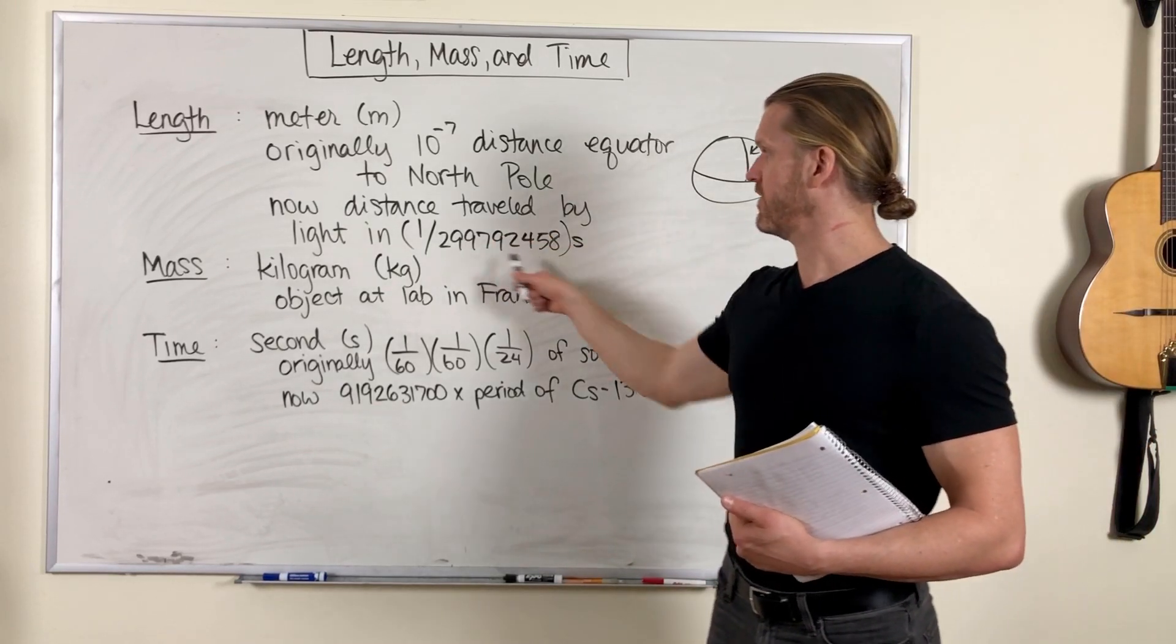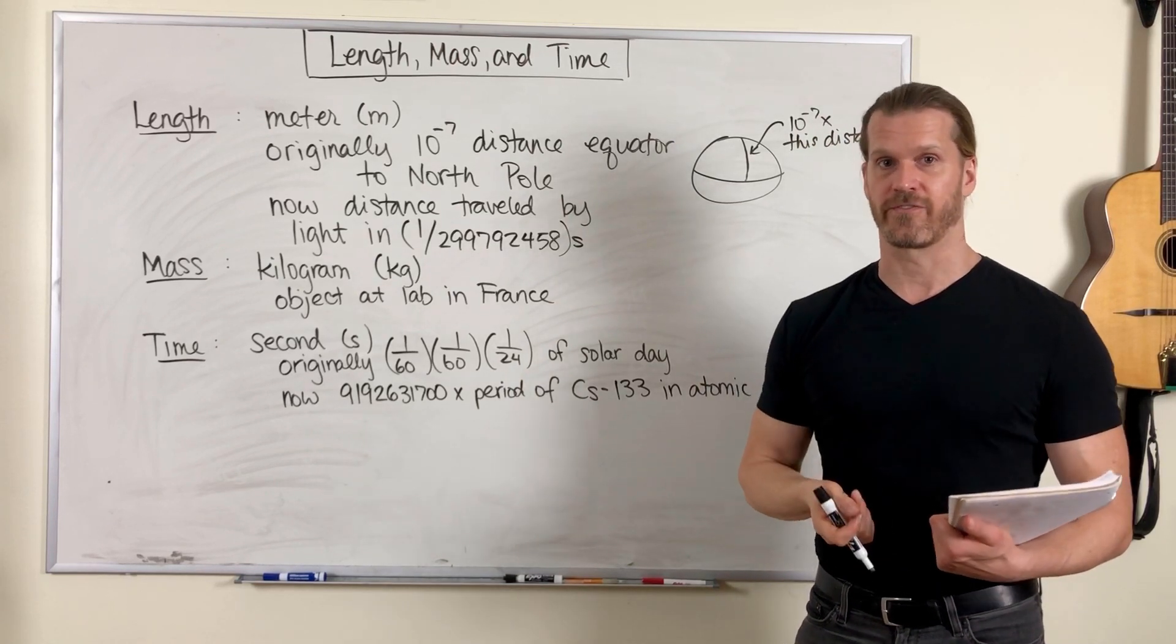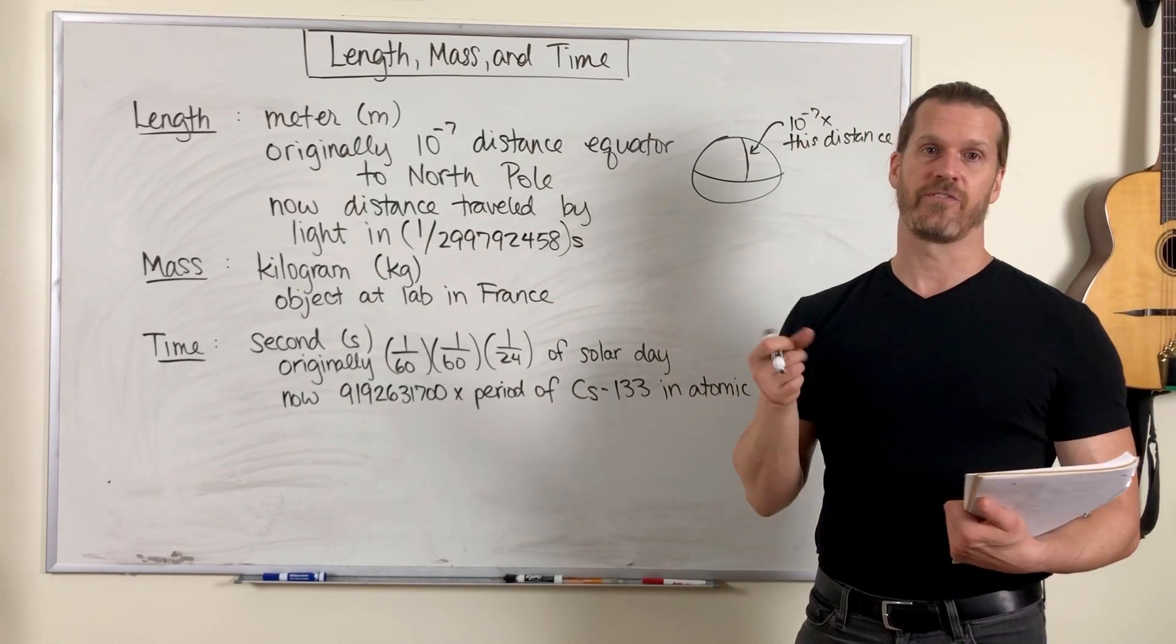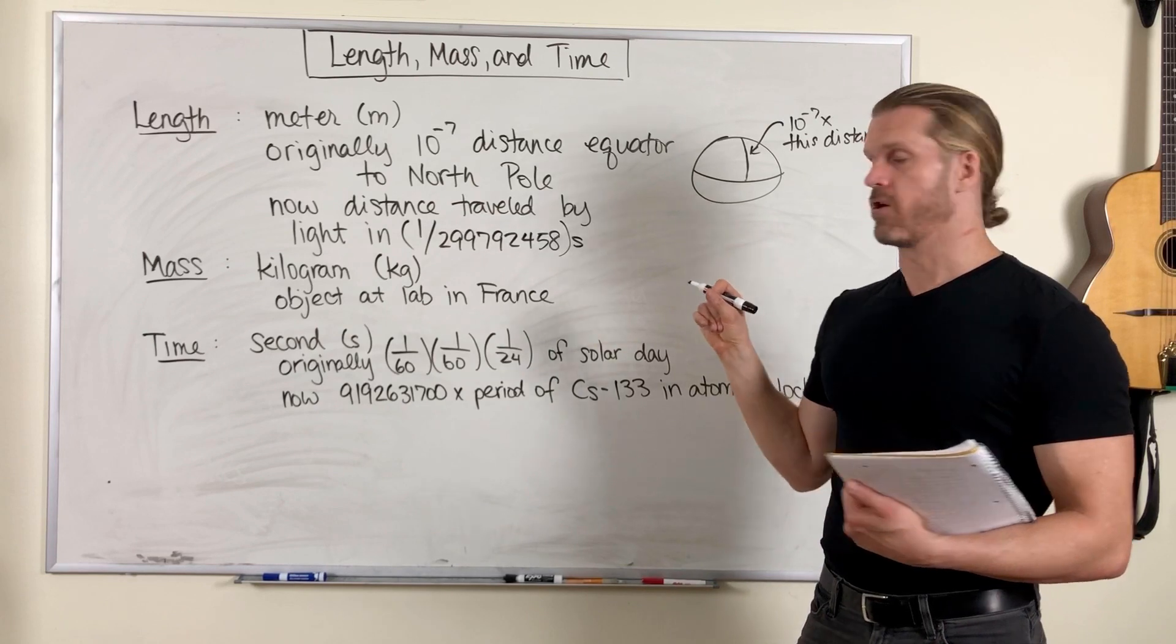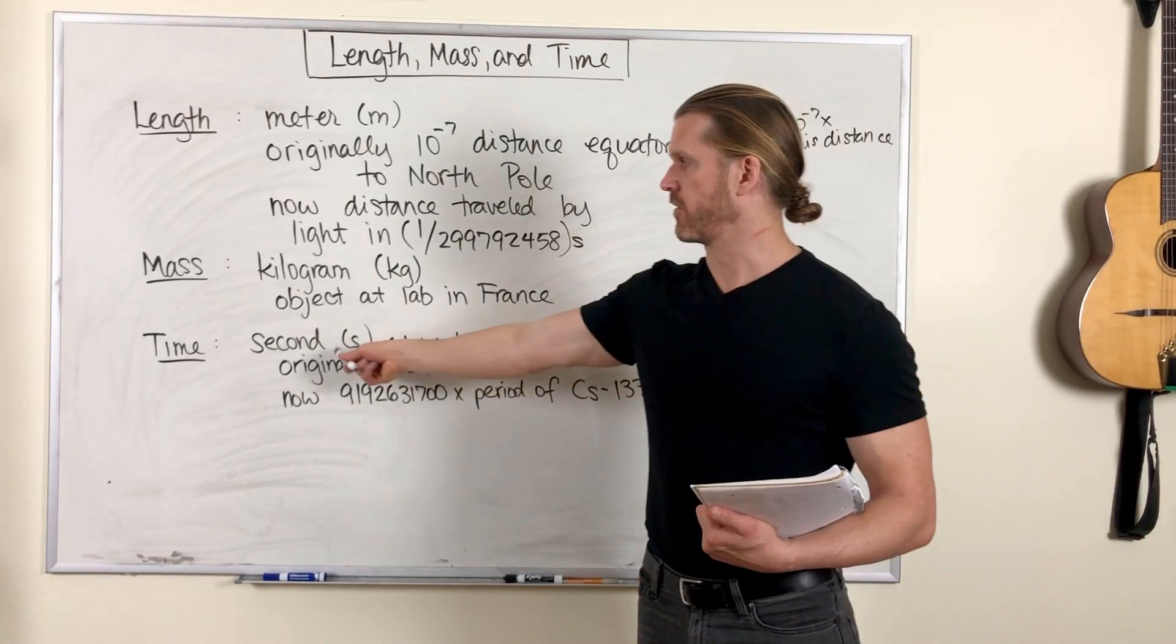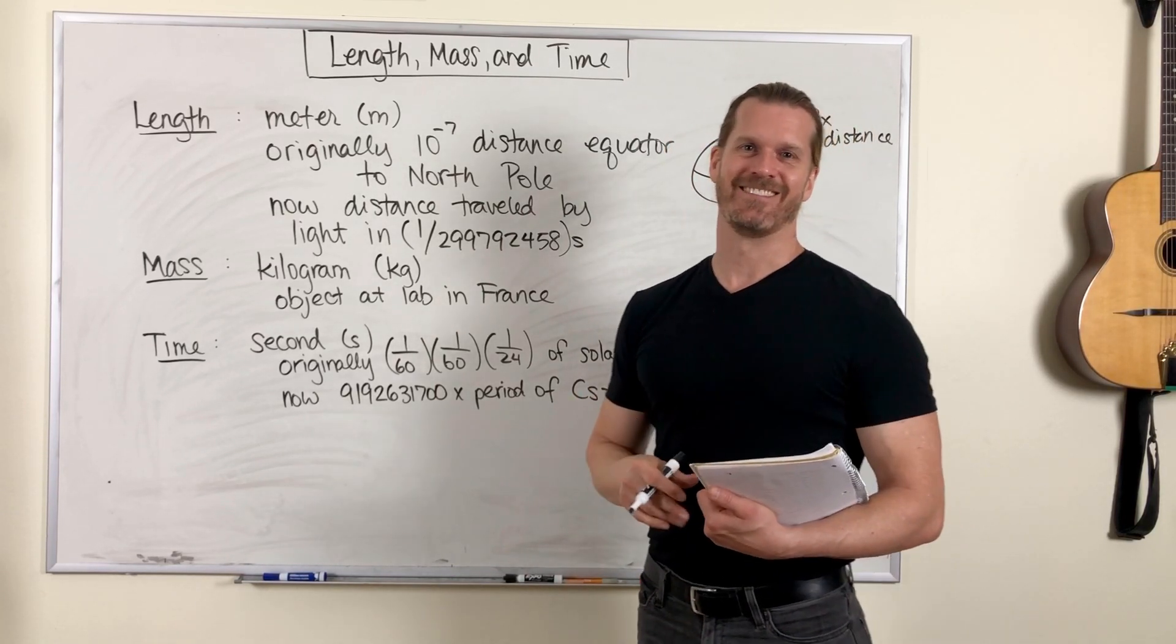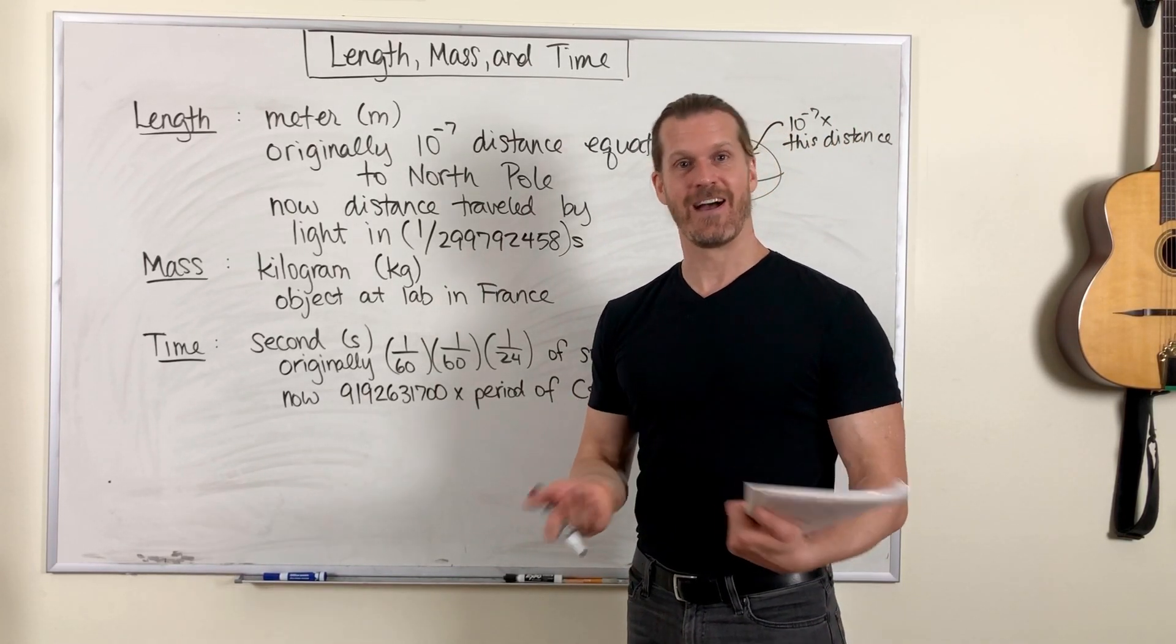The reason why we can define this now is because we have atomic clocks, and atomic clocks are a really precise way of measuring time. We'll see in our definition for time in just a second how we can use this to define a second.